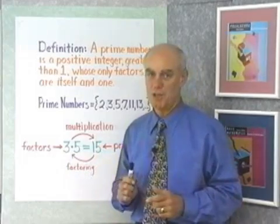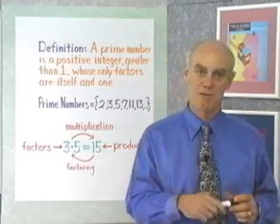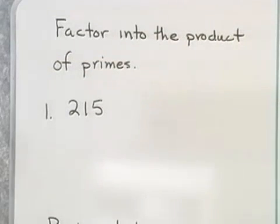Now, one of the things that we want to do to begin here is to take numbers and factor them into the product of prime numbers. Here's our first example. It says, factor into the product of primes, and what we have is 215.